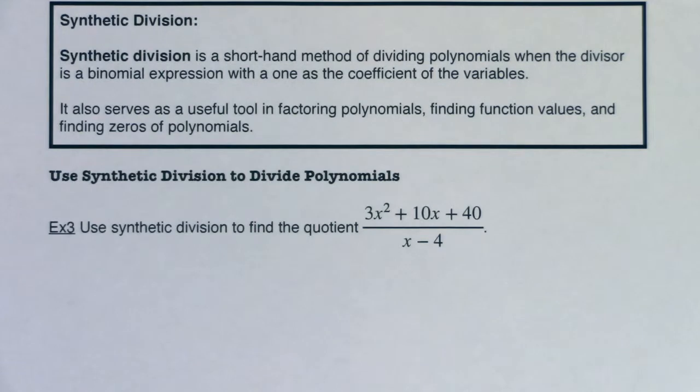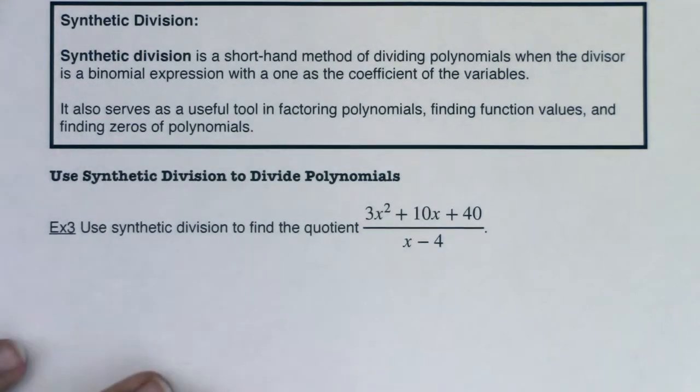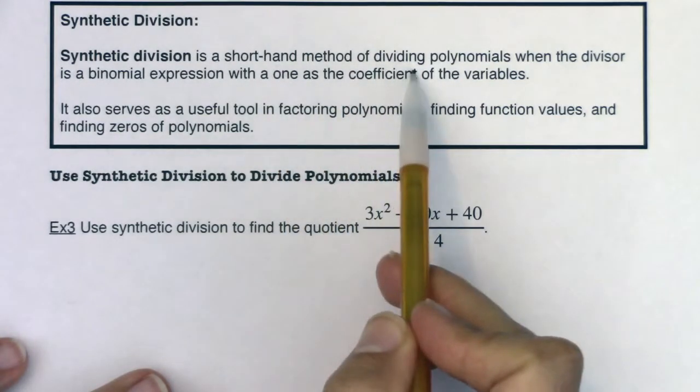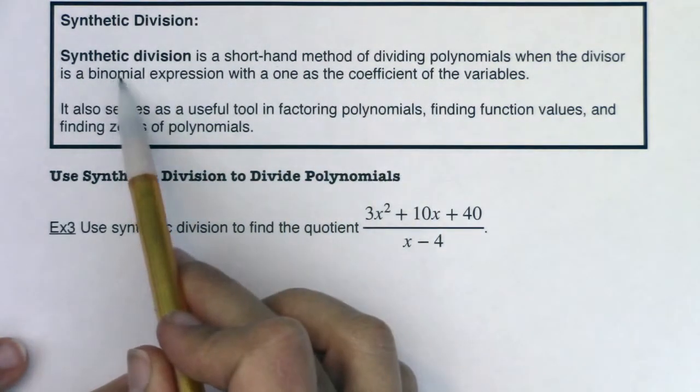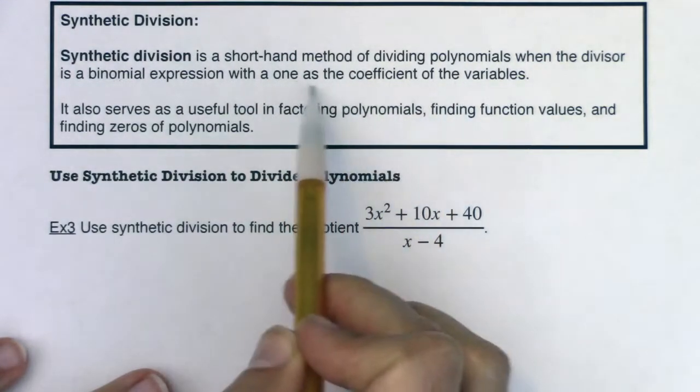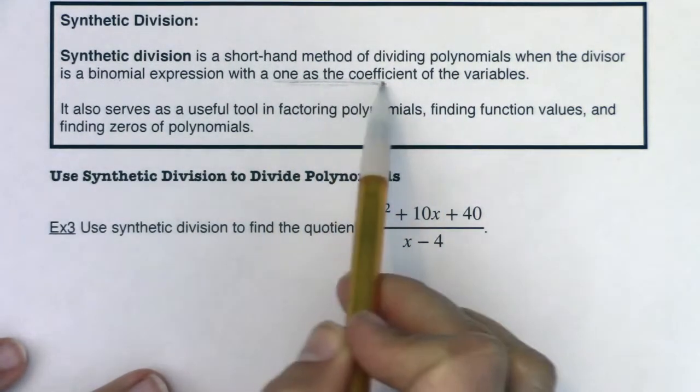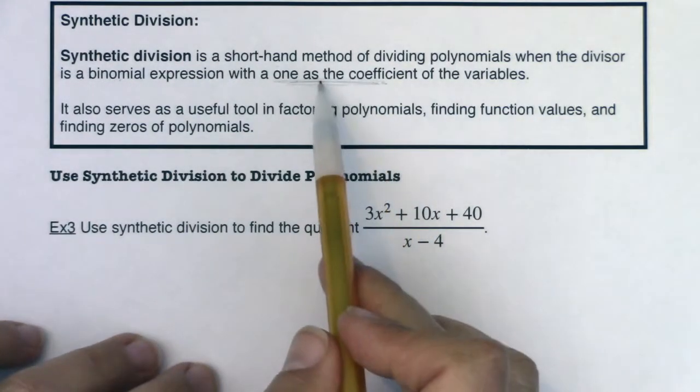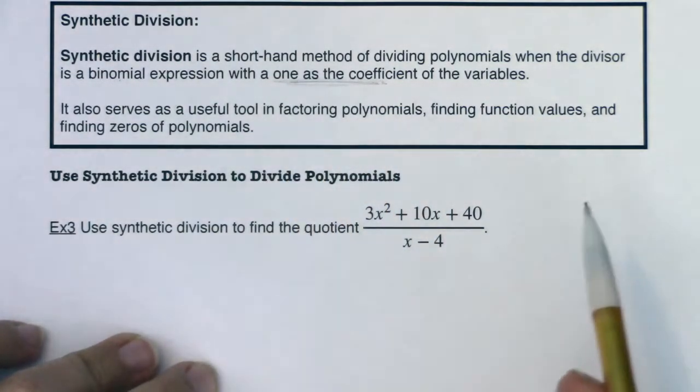Hey Math 31, let's try and unpack synthetic division. Synthetic division is a shorthand method of dividing polynomials when the divisor is a binomial expression with a one as the coefficient of the variables. Now that's going to become important. There are a couple of things that we need to make sure are happening when we use synthetic division.